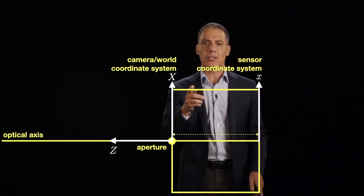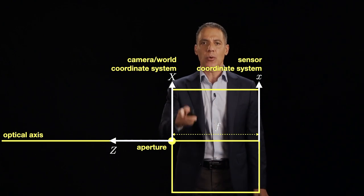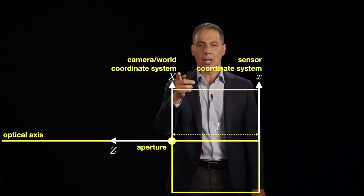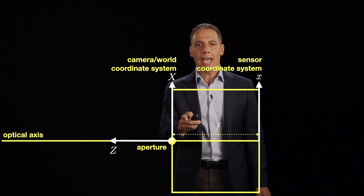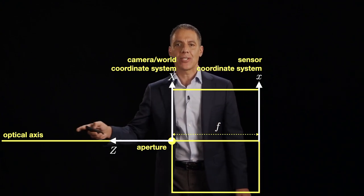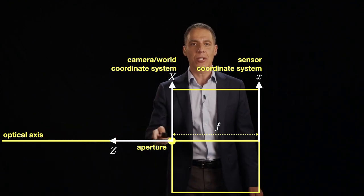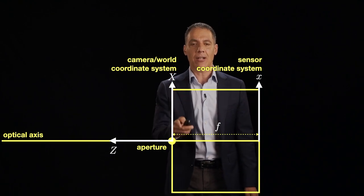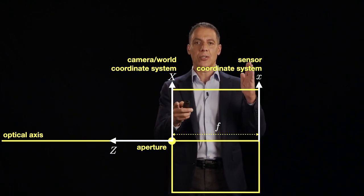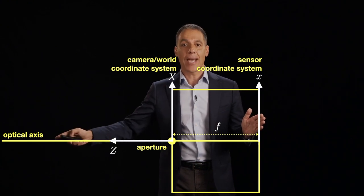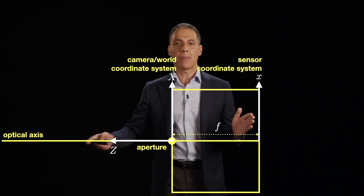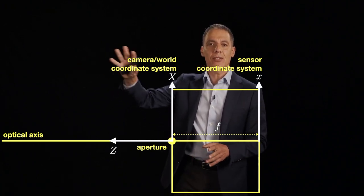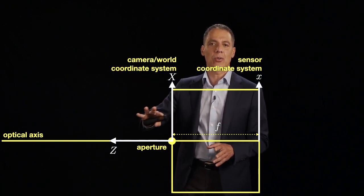The first coordinate system is the world coordinate system. Points are specified by their X coordinate — all world coordinates will be in capital letters — and a Z dimension, which is how far along the optical axis. This is a very special coordinate system: the horizontal axis is parallel to the sensor, and the Z axis is along the optical axis. We specify things in the world in this X, Z two-dimensional coordinate system.